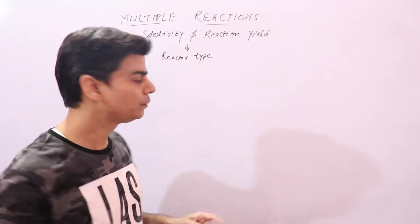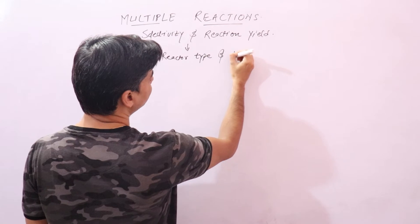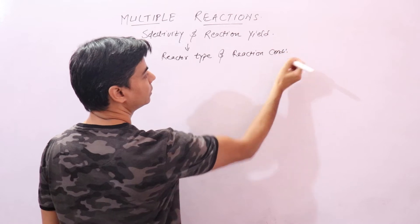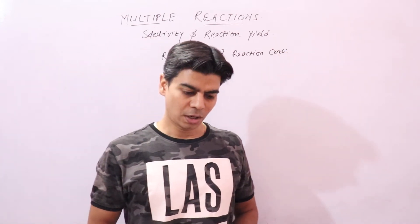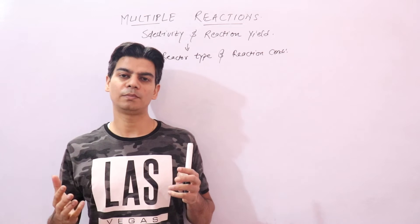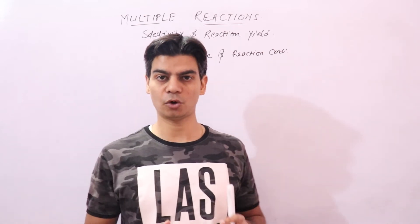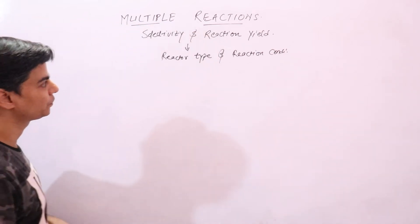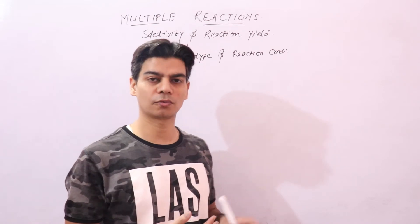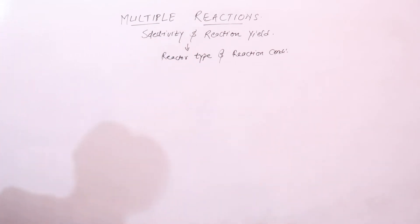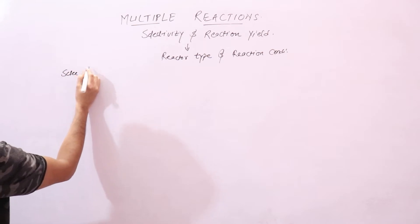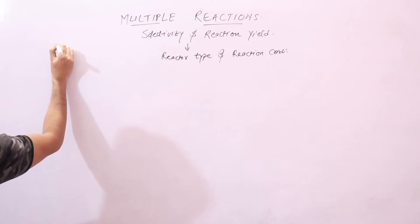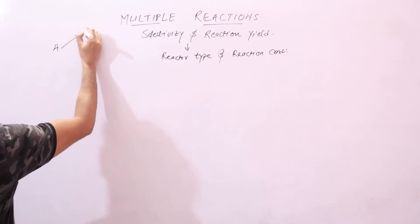These two terms will help you determine the reactor residence time and reaction conditions — under what conditions you should perform a reaction so that you have maximum desired product and minimum undesired product. Let's look at the simple formulas for selectivity.